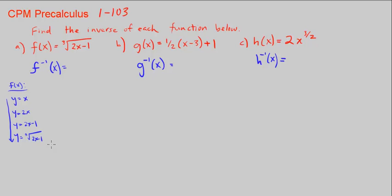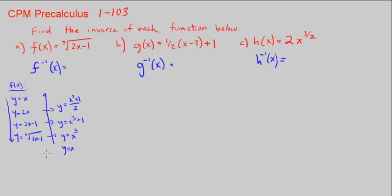Now to undo it, we do the opposite. We start with y equals x. The opposite of the third root is to the power of 3. The opposite of subtracting 1 is adding 1. The opposite of multiplying by 2 is dividing by 2. So our inverse function is x cubed plus 1, divided by 2.